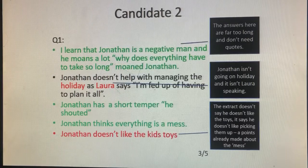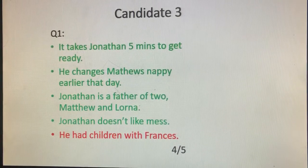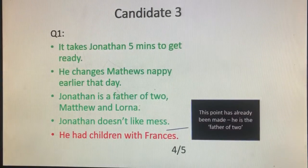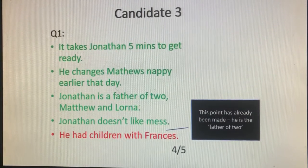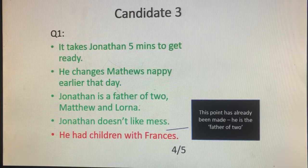Candidate 3 scores 4 out of 5 — four bullet points are accurate, the last one is not. 'He had children with Francis' — this point has already been made; the candidate already said 'he's a father of two,' which is essentially the same as saying he has children with Francis. So, 4 out of 5 for this response.